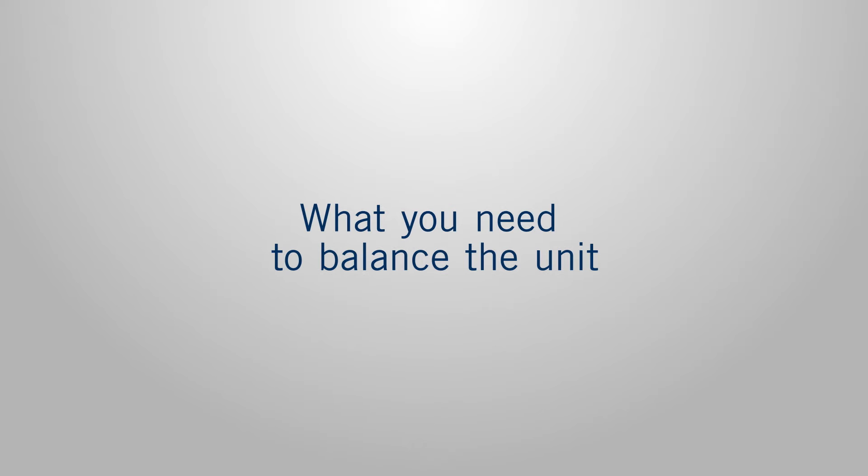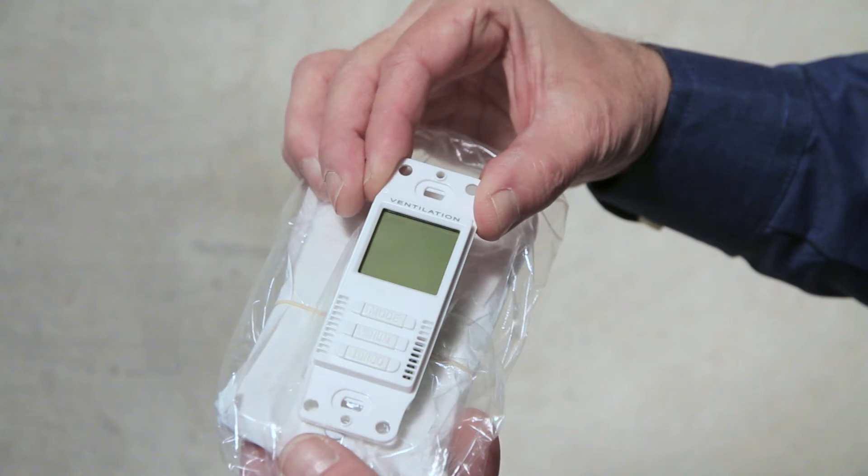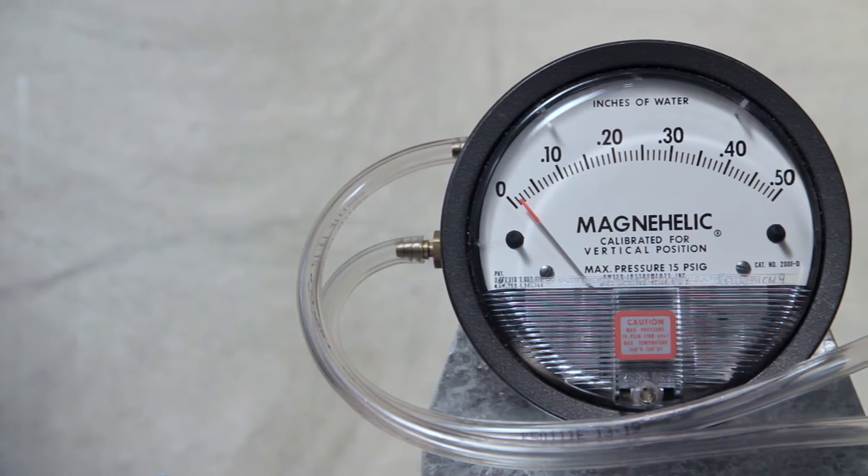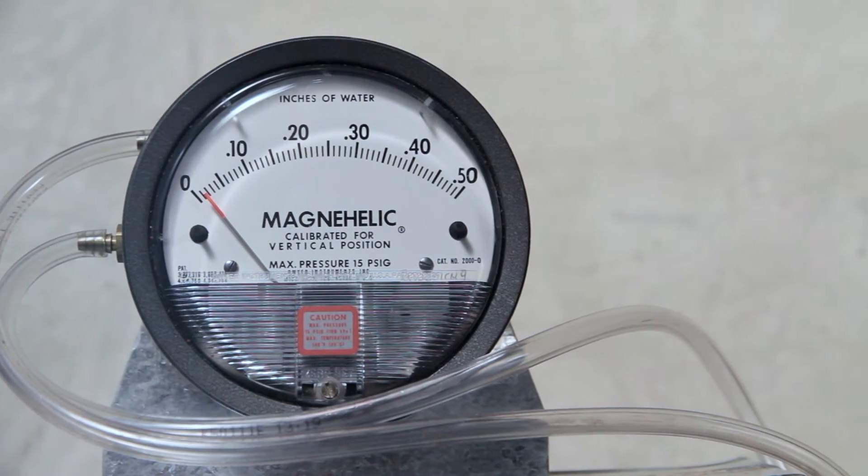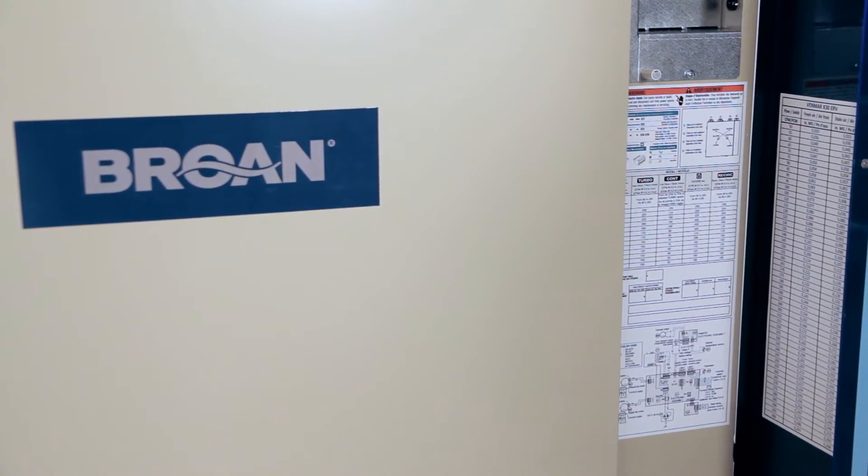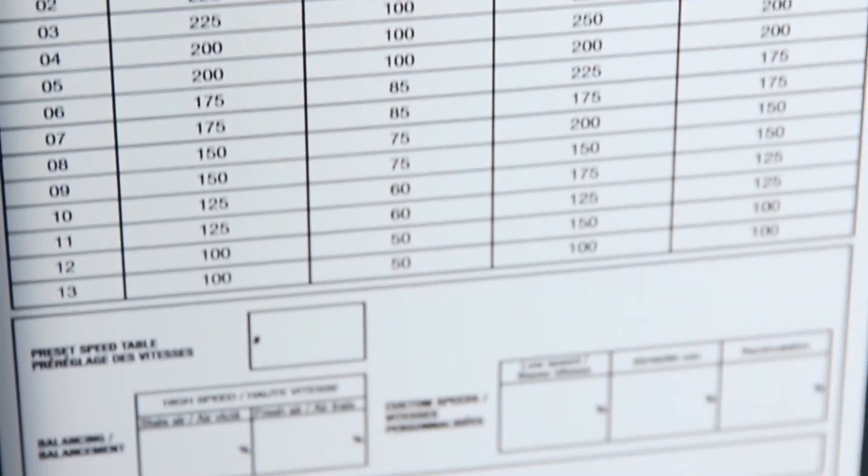It's important to note that you will require the following to perform the balancing: The HE Series Main Wall Control, a 0-0.5 inch water pressure gauge and two plastic tubes, and the balancing chart and preset table located on the unit.